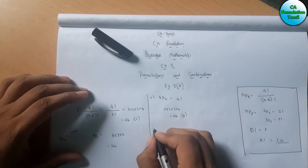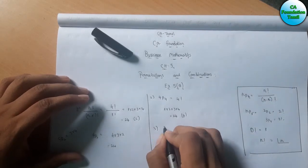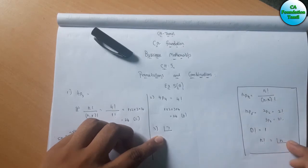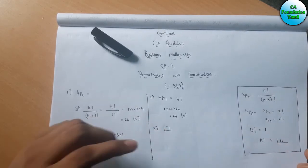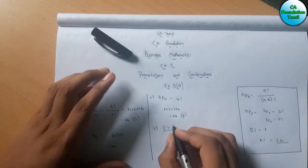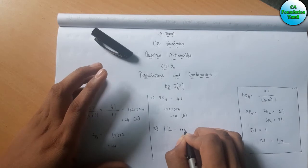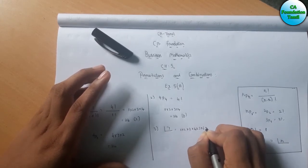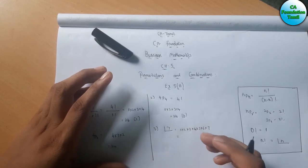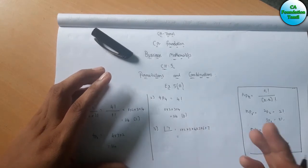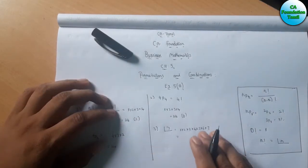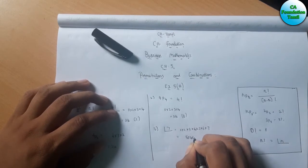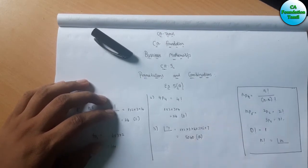The third sum is factorial of 7. This symbol denotes factorial. Factorial of 7 equals 1 into 2 into 3 into 4 into 5 into 6 into 7. Using a calculator, the answer is 5,040. This is option A.